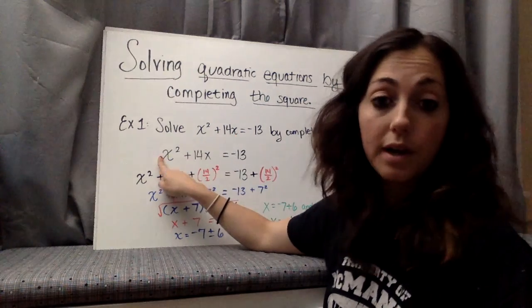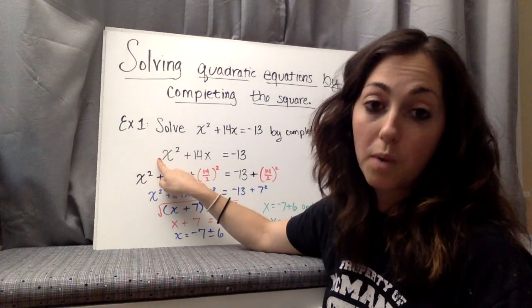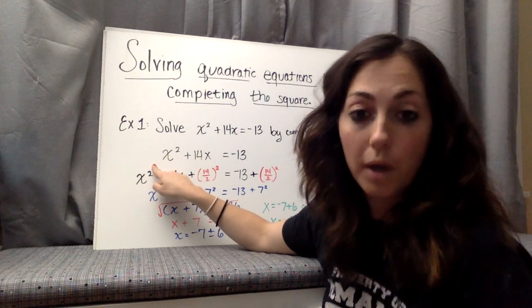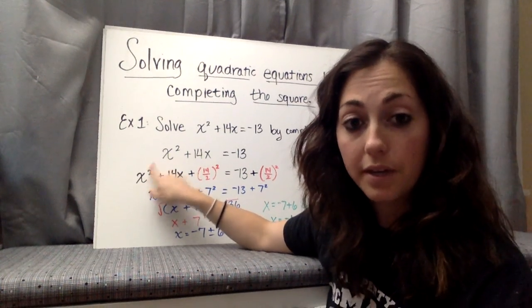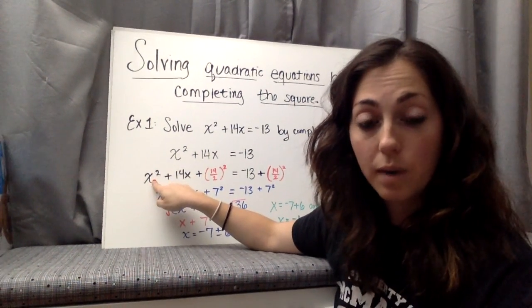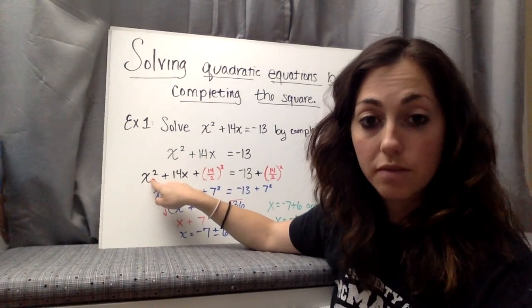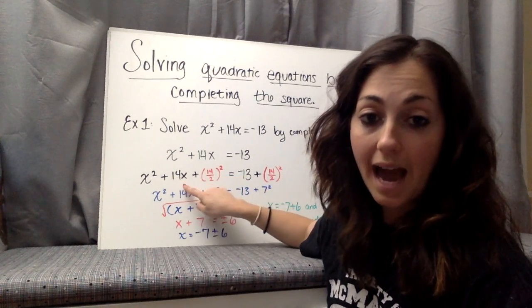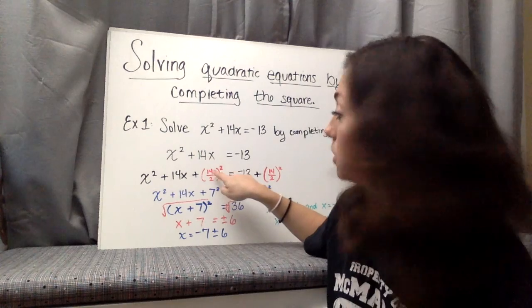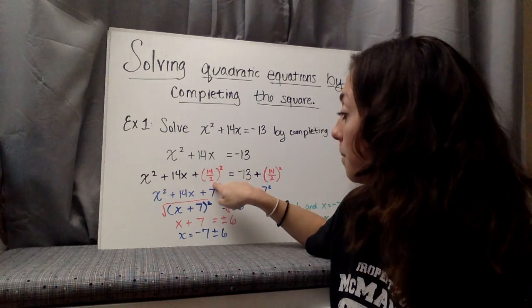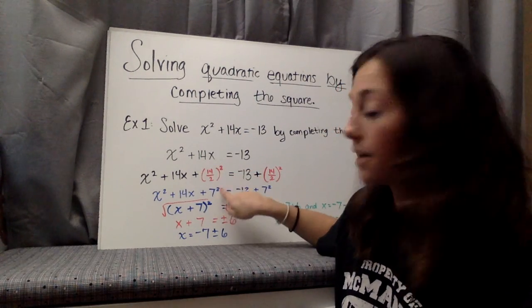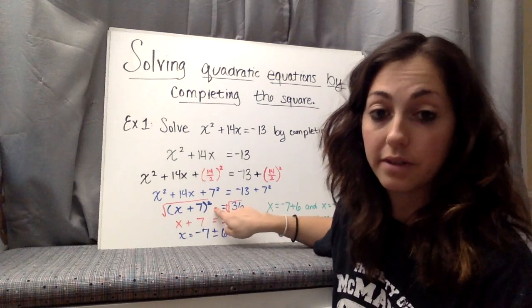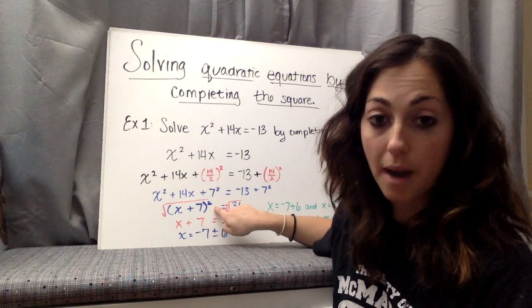Important: our a has to be 1, and it is in this case. So we have x squared plus 14x, and the c value would be half of b squared. So 14 divided by 2 squared, which is 7 squared, which gives us x plus 7 to the second power.